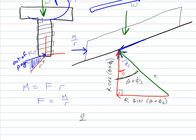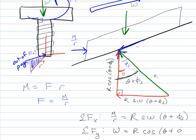So I can sum up my forces in the x direction, and I'll get M over little r, now that's the radius, is equal to the resultant sine theta plus phi_s. And my sum of my forces in the y direction is gonna be W times R cosine theta plus phi_s.